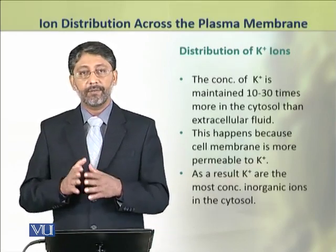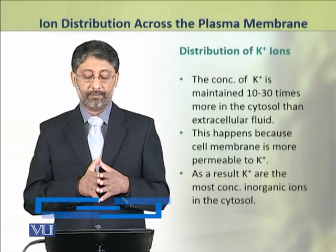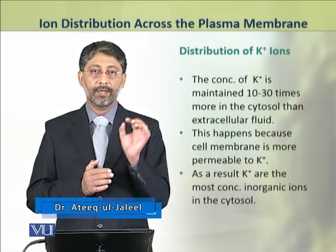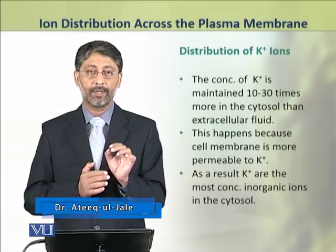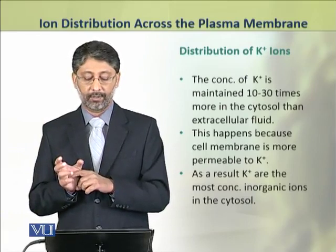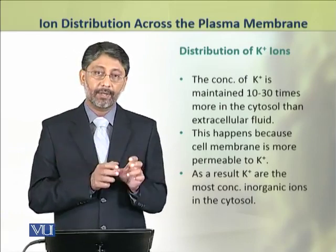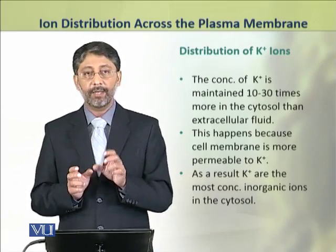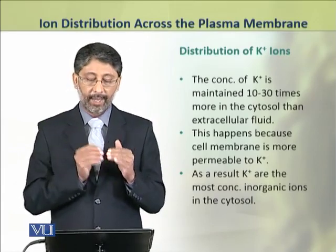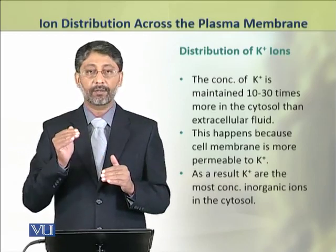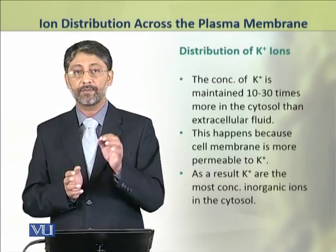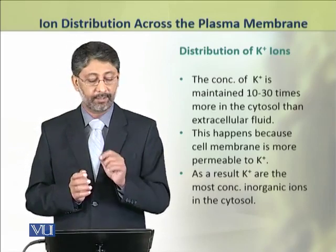First, we shall discuss the distribution of potassium ions. The concentration of potassium ions is maintained 10 to 30 times higher inside the cell than outside. This happens because the plasma membrane is more permeable to potassium ions. As a result, potassium ions are the most concentrated ions inside the cell.